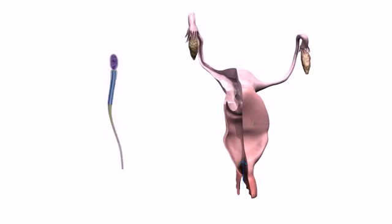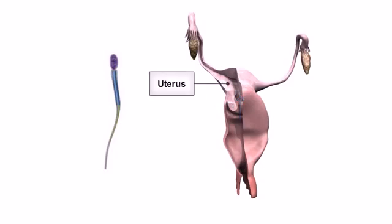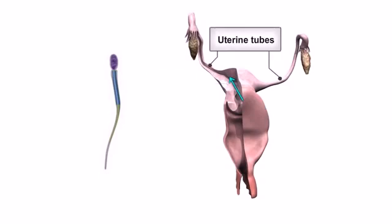They swim through the cervix, propelled by whip-like motions of their tails, or flagella, after which muscular contractions of the uterus direct them to the uterine tubes.